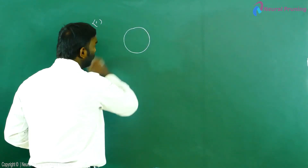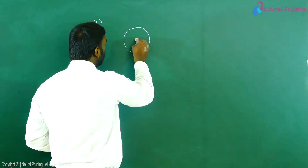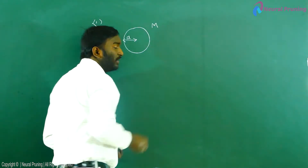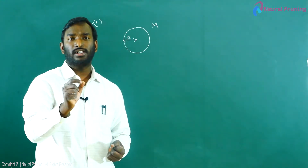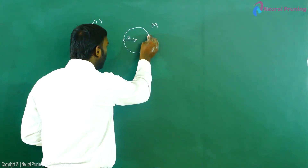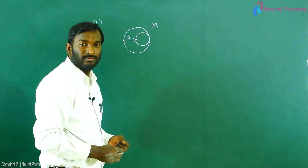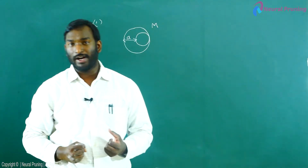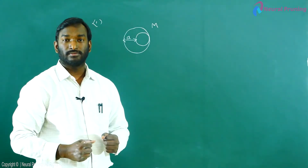Suppose I take a circle and the radius is 'a'. Consider the radius of this circle is 'a', and m is the mass of the circle. You know the position of center of mass — if it is a circle, the position of center of mass will be at the center. Now what I will do is remove a portion of the circle. I'll ask you to find the position of center of mass of the remaining portion.